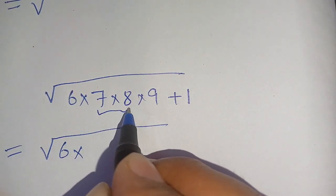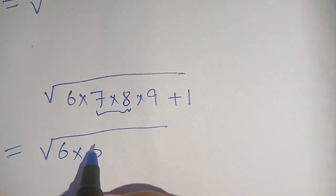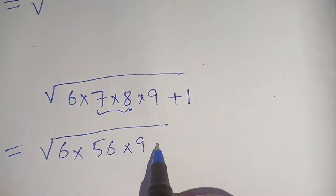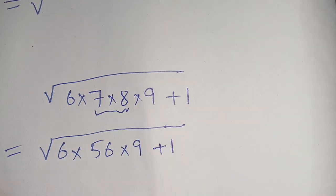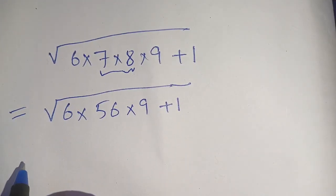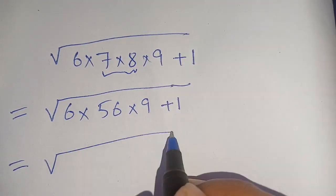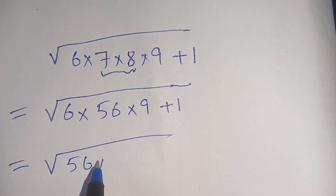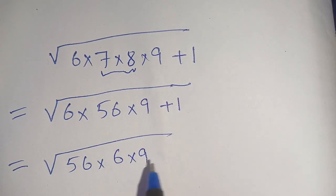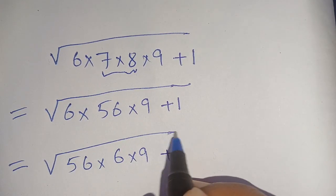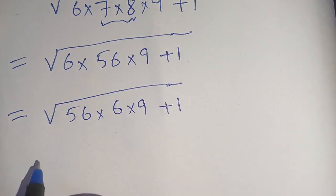In the next step, we can write it as square root of 56 times 6 times 9 plus 1. Now in the next step we can write it as square root of 56 times 6 times 9, which becomes 54, plus 1.